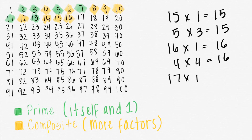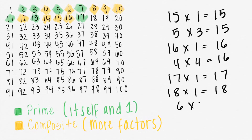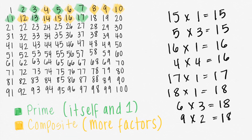The only way to get 17 is 17 times 1 equals 17, so 17 is prime. 18 times 1 equals 18. 6 times 3 is also 18, and 9 times 2 is also 18, which makes 18 composite.